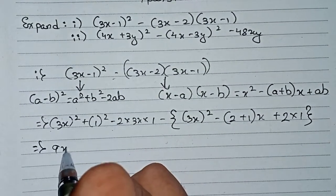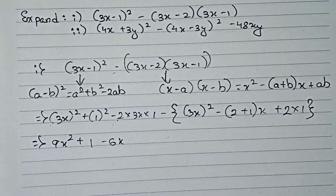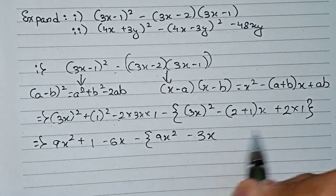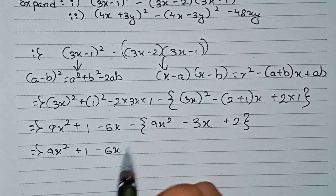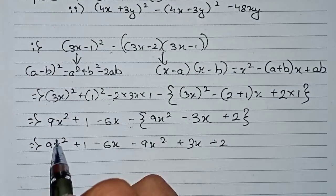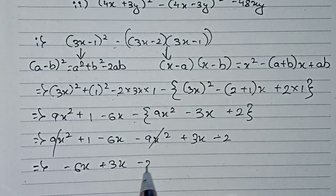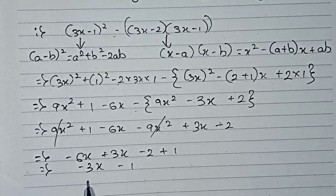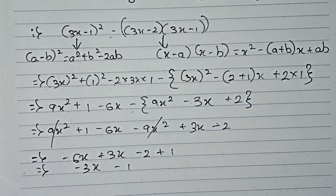So here 9x² plus 1 minus 6x, and for the second bracket: 9x² minus 3x plus 2. Expanding: 9x² plus 1 minus 6x minus 9x² plus 3x minus 2. So 9x² minus 9x² cancels out, and we get minus 6x plus 3x minus 2 plus 1, which gives us minus 3x minus 1. So minus 3x minus 1 is the expanded form of (3x-1)² minus (3x-2)(3x-1).